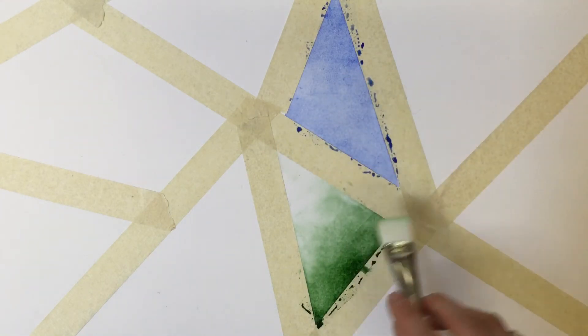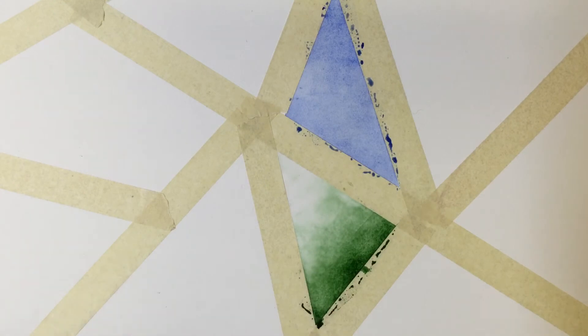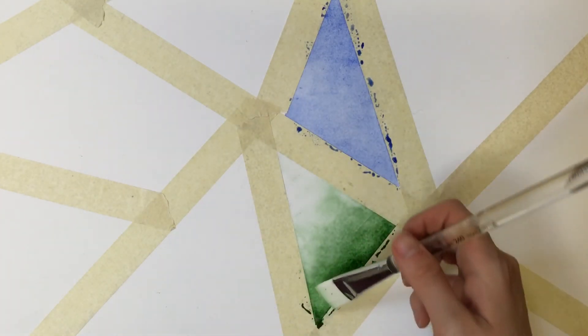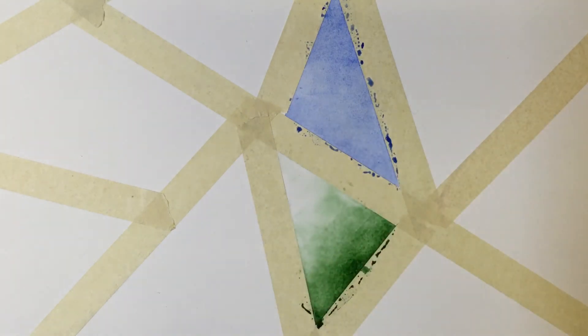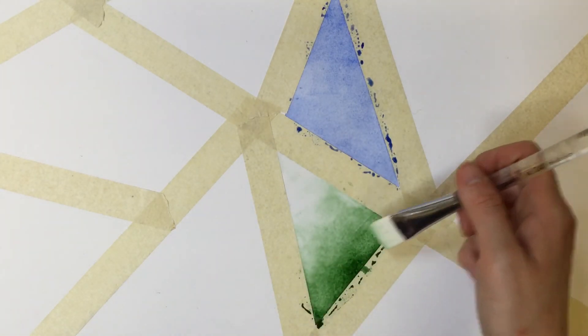You can also start with the entire section wet with just clean water. I would just use my brush with no paint on it and wet it down that way, and then I would start by adding pigment at the end and letting it slowly fade up.